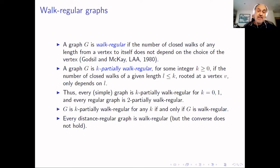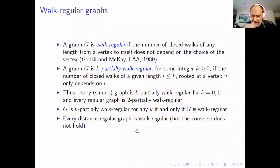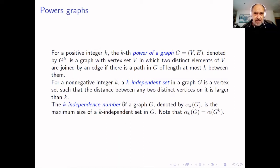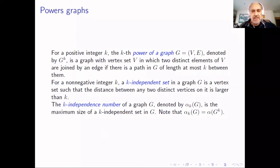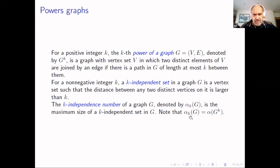This allows us to give a natural generalization: a graph is K-partially walk-regular if the same condition holds, but only for the number of closed walks of given length at most K. Every simple graph is K-partially walk-regular for K equal 0 or 1. Every regular graph is 2-partially walk-regular because the number of walks of length 2 at a vertex is just the degree. G is K-partially walk-regular for any K if and only if it is walk-regular.